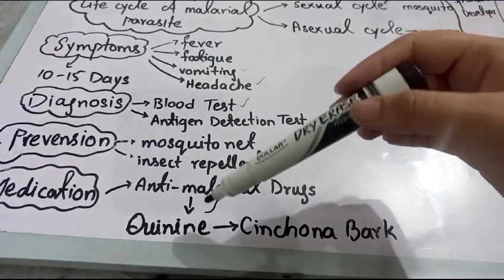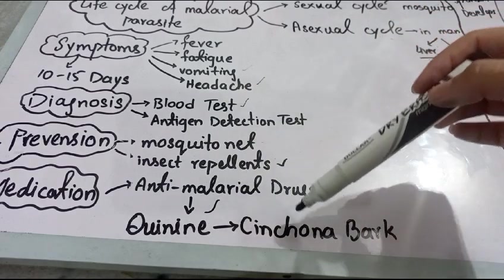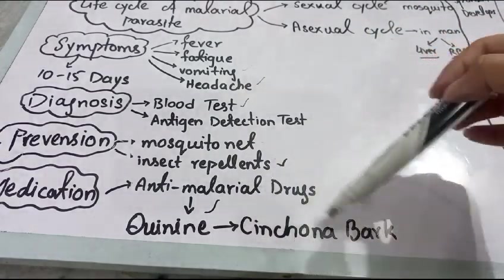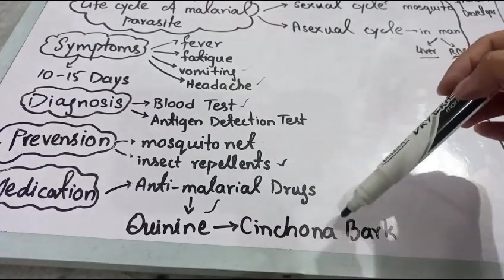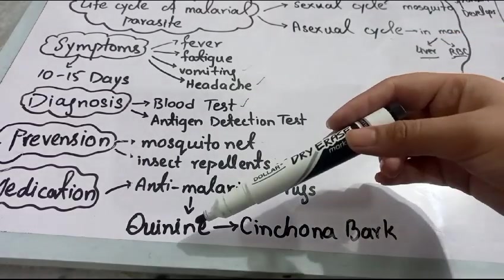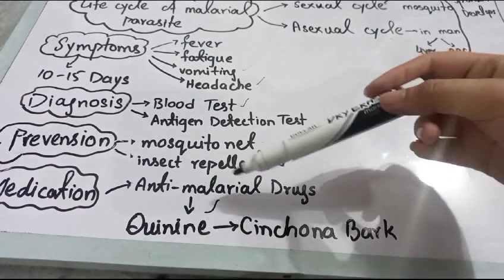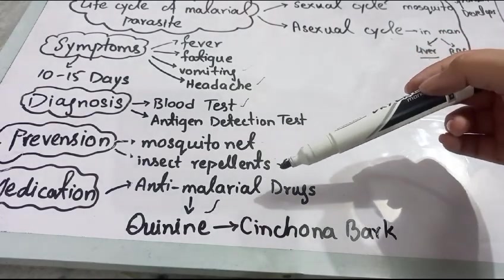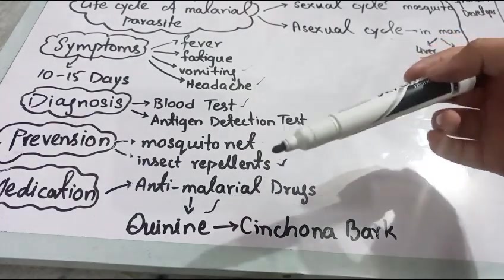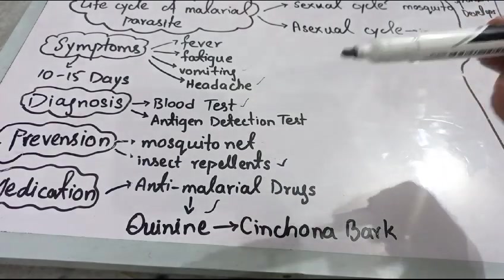Quinine is naturally present in a crude drug which is Cinchona bark. Cinchona is a tree and the bark of that tree contains quinine, which acts as an anti-malarial agent and will treat you from malaria.